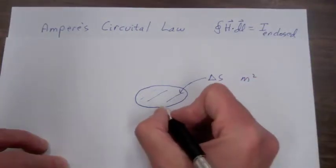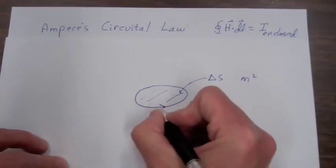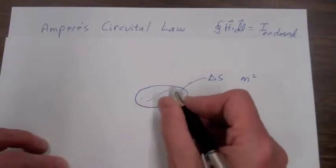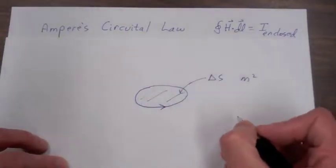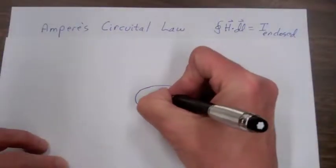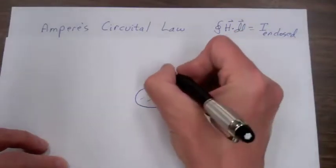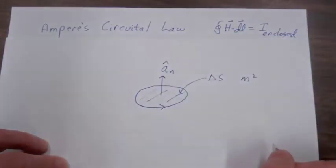Now if our direction of integration is in the direction of this arrow, if you put the fingers of your right hand in the direction of the integration, the direction of your thumb will define this unit vector a sub n.